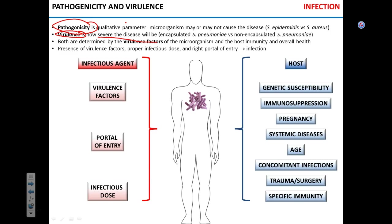Both pathogenicity and virulence can be explained from the standpoint of virulence factors of a pathogen and the immunity and overall state of the host. Virulence factors are anything responsible for signs and/or symptoms of infection. For example, Clostridium perfringens produces a virulence factor called alpha toxin that causes necrosis of human tissue. If you knock out alpha toxin, that modified strain of Clostridium will be much less virulent.